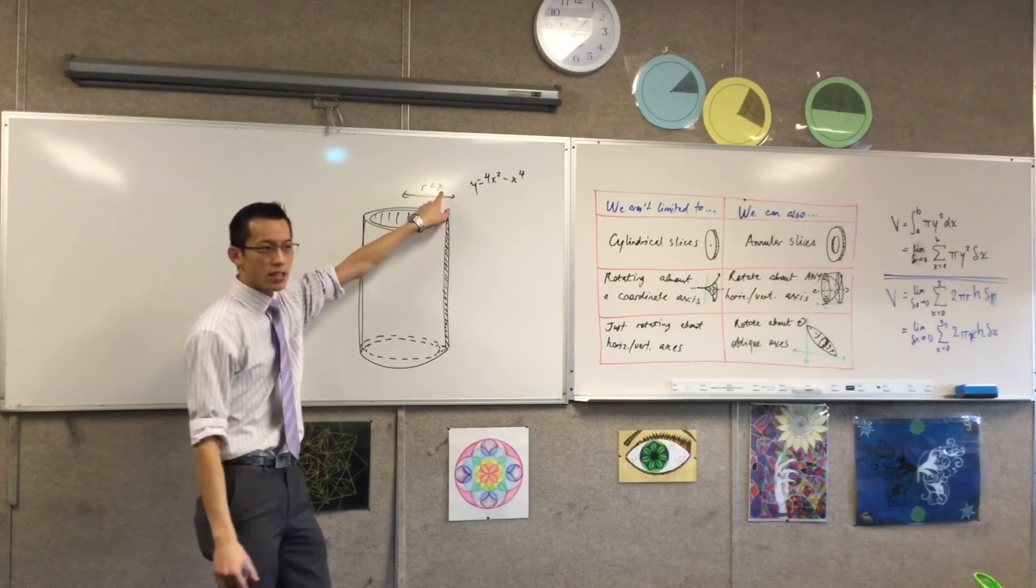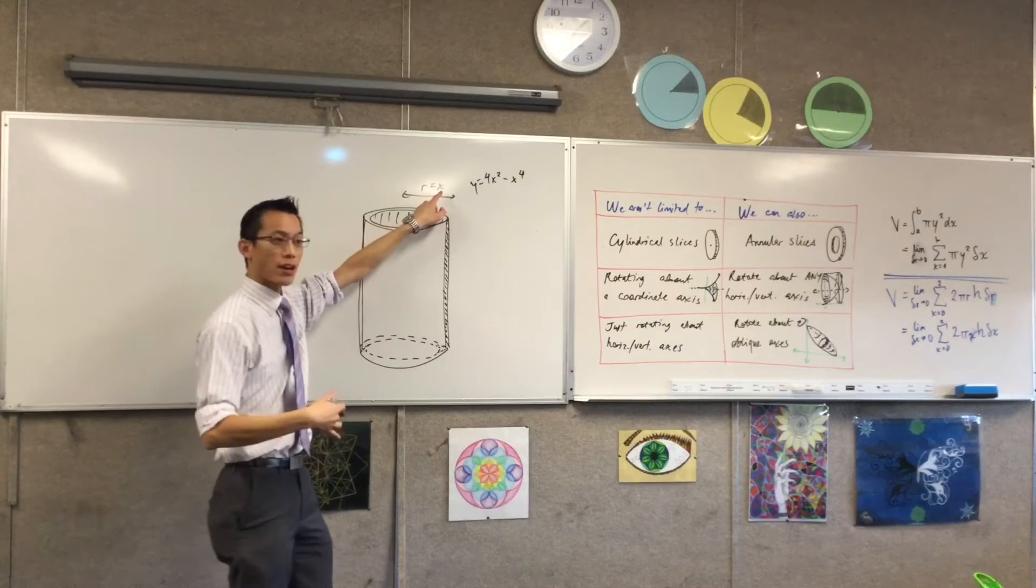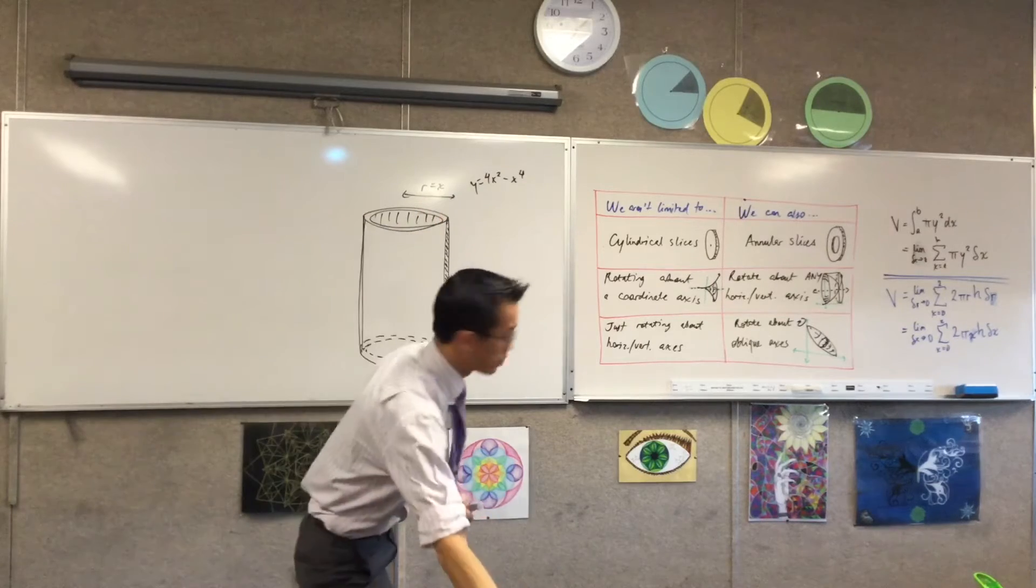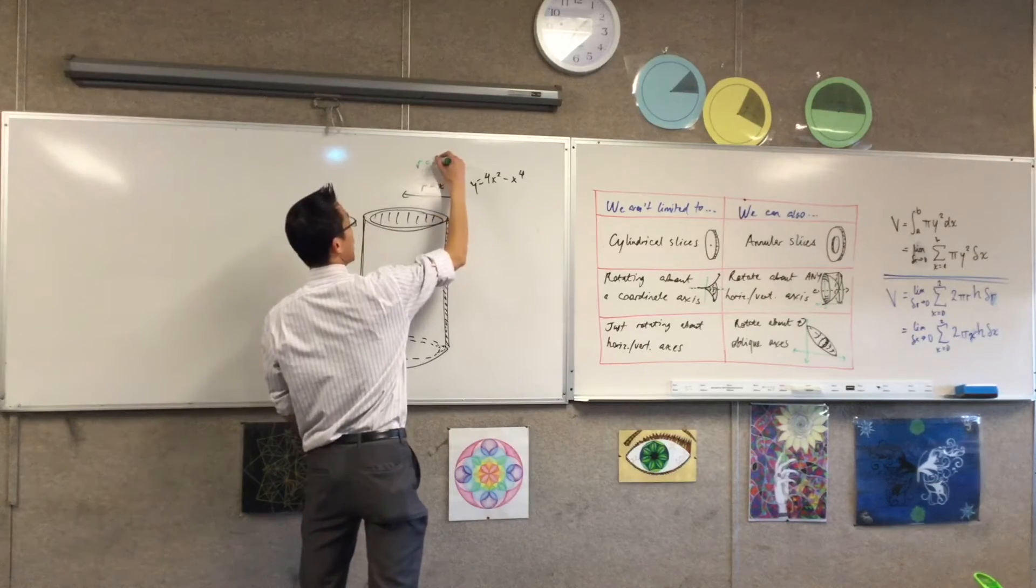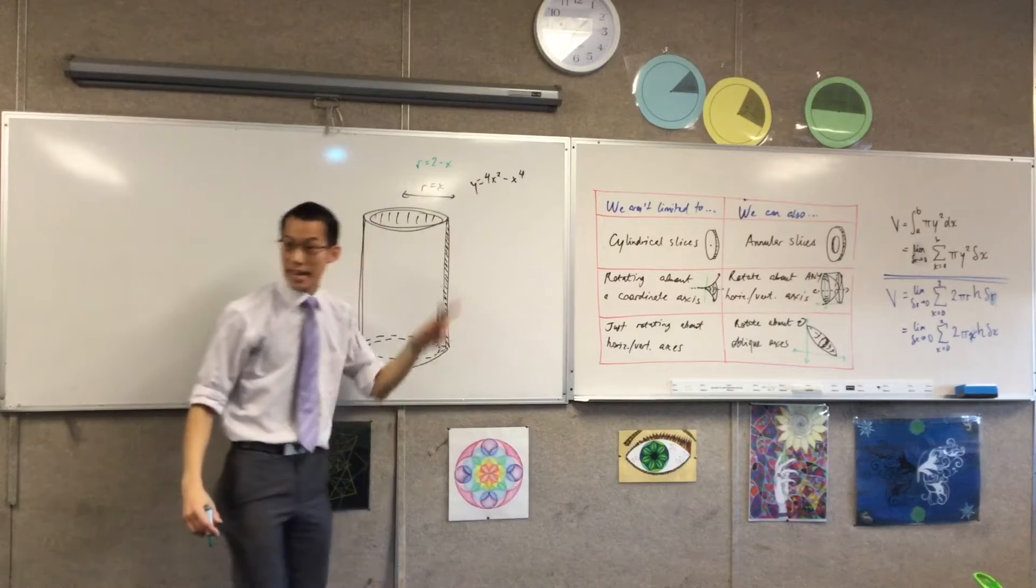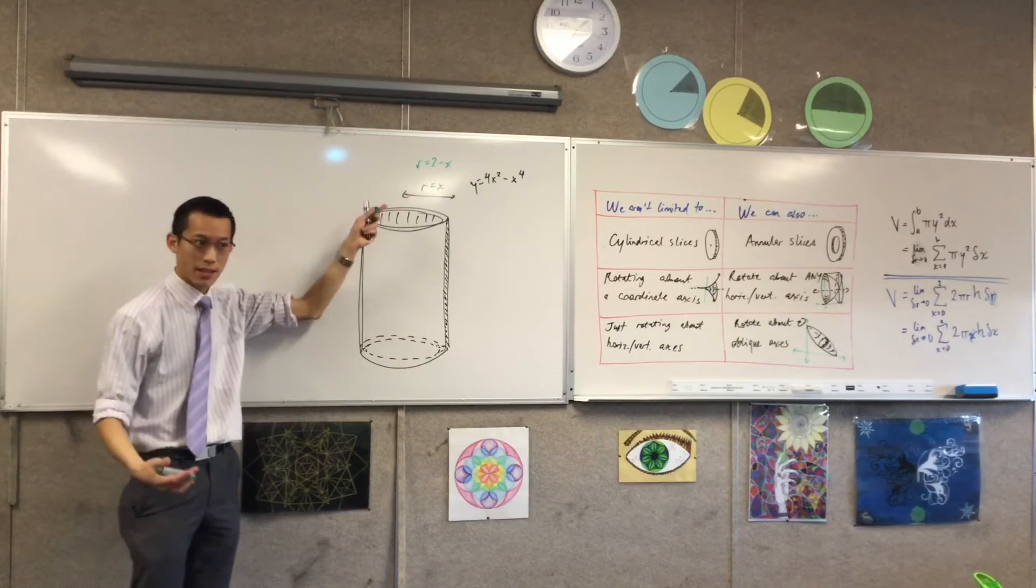You're just going to have to say, well, this is not just x. It's the distance of x from two. So for instance, you might have a radius that's two minus x. That's the distance of x from two. Does that make sense?